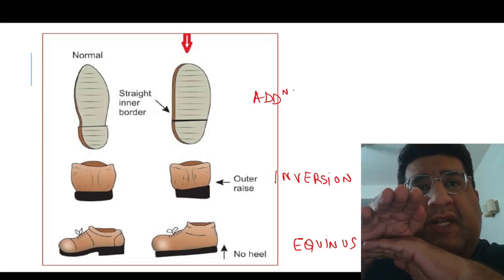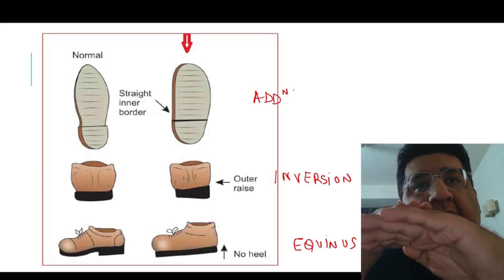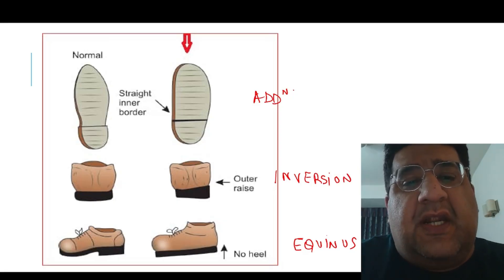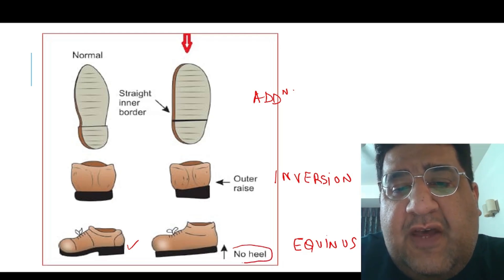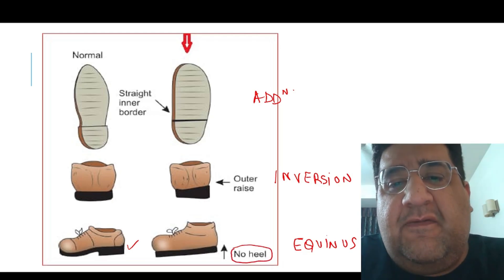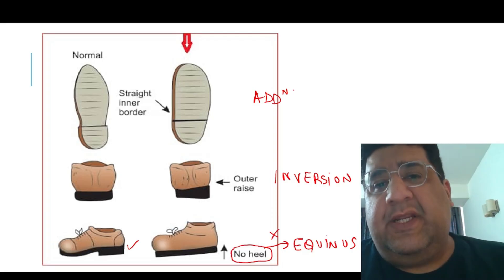So we should have a completely flat heel, no heel. This heel can lead to equinus. We don't want that. So we should have no heel, empty heel, flat heel, so that we can prevent equinus.